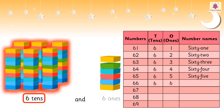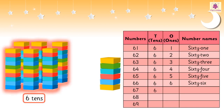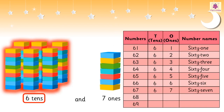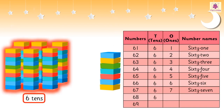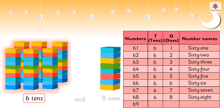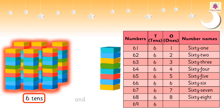Six tens and six ones is 66. Six tens and seven ones is 67. Six tens and eight ones is 68. Six tens and nine ones is 69.